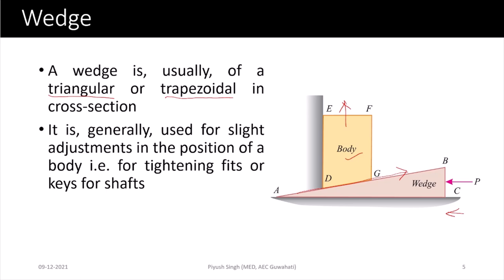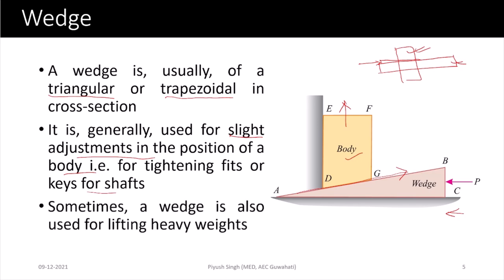A wedge is an object with a triangular or trapezoidal cross-section. It is used for slight adjustments in the position of a body or for tightening fits for shafts. For example, if a hammer handle has worn out and the hole has become larger, we can put a wedge and push it inside. As you push it inside, it will tighten the fit between the hammer and the handle.